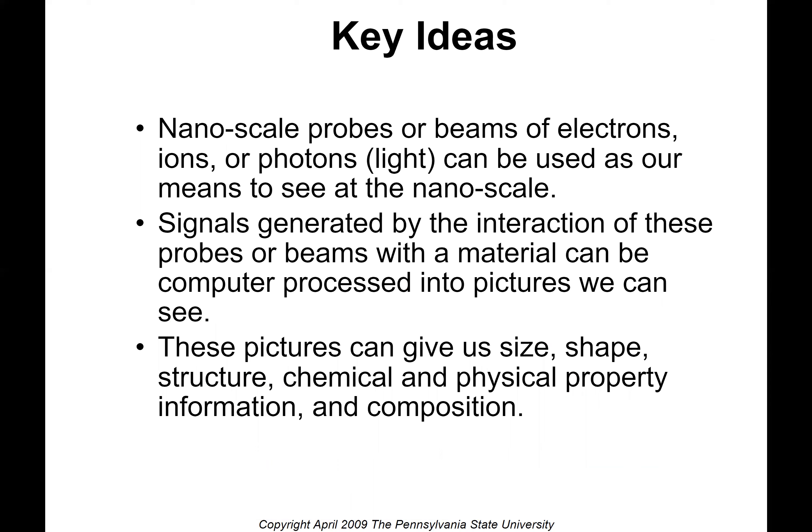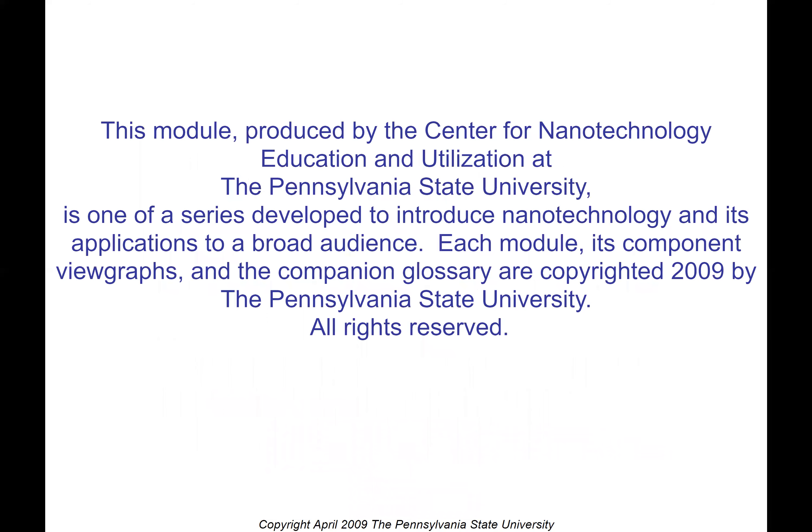Final ideas: nanoscale probes or beams of electrons, ions, or photons can be used as our means to see at the nanoscale. As the first video showed, light — which is what we use for light microscopes at school — has a wavelength too big to see anything at nanoscale size. You have to use other beams with much smaller wavelengths. Signals generated by the interaction of these probes or beams with a material can be computer-processed into pictures we can see. These pictures can give size, shape, structure, chemical and physical property information, and composition.